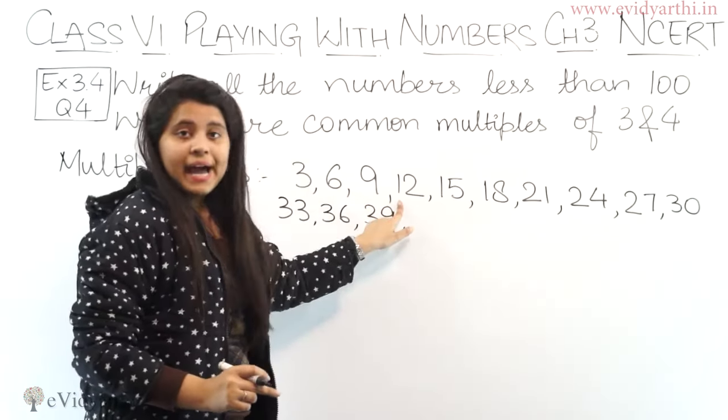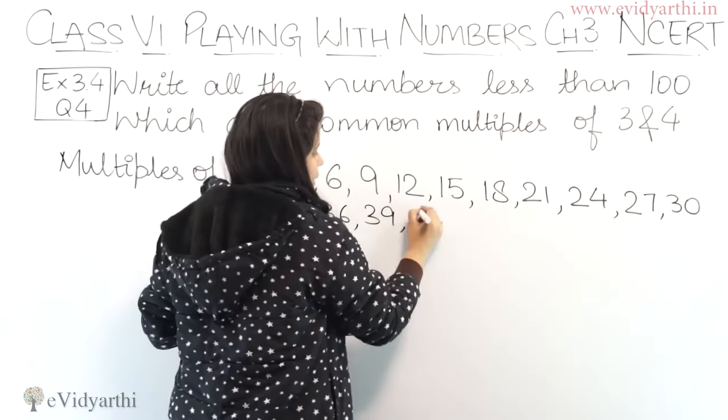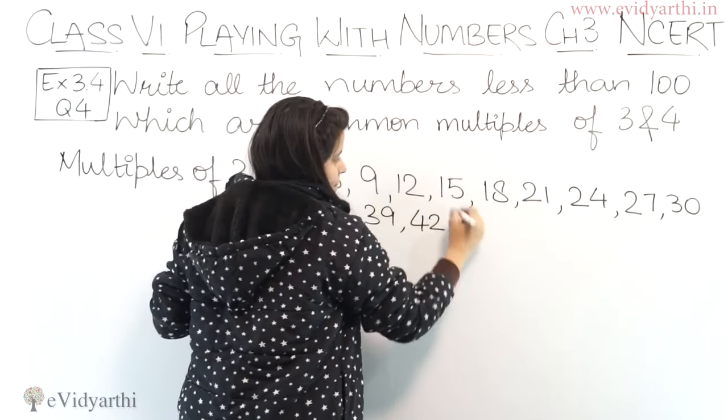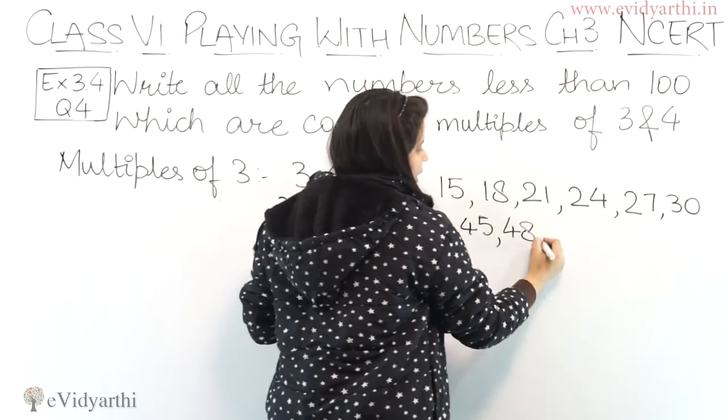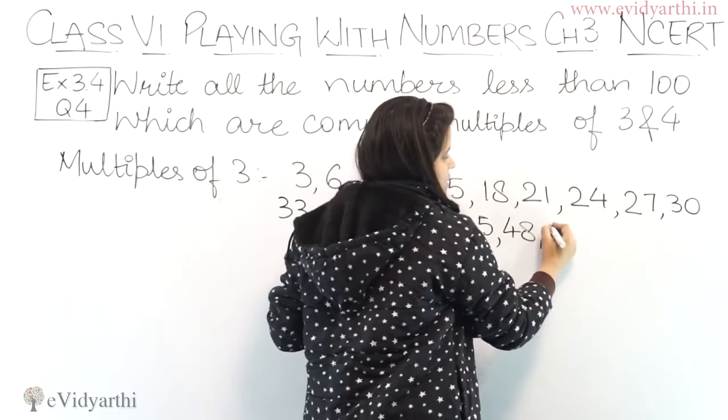39. Now this is 12. If you add 3, then it's 42. So it is 45, then 48. Now it is 21, then it's 54, then 57.